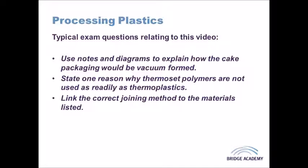For joining thermoplastics, there are many methods: screws; integral snap fixings, where the plastic is processed so parts can snap together like the two sides of a remote control; captive nuts, where a nut is formed within the plastic during processing to hold it in place; adhesives, which apply to any material; thermal welding, using heat to join two plastics; and ultrasonic welding, which vibrates the plastics until they generate heat and bond together.